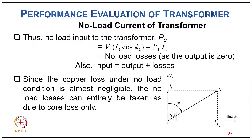The no-load input to the transformer is P₀ = V1 × I₀ × cosφ₀ = V1 × Ic. Since the copper loss under no-load condition is almost negligible (no-load current is around 1–2% of full load), no-load losses can be entirely taken as core loss only.